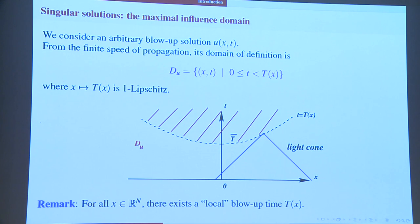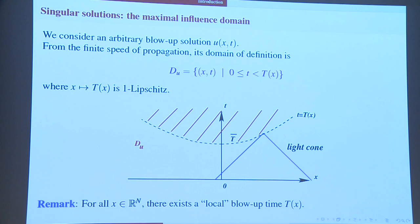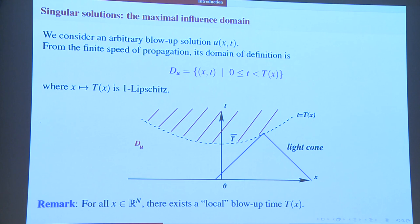I will not consider global end-time solutions but only solutions which exist up to some time t-bar. From the finite speed of propagation, the solution may stop existing at this minimal time and then continues to exist somewhere else up to some surface which is a graph x gives capital T of x — a kind of local blow-up time. From finite speed of propagation, this graph is already one-Lipschitz, because my domain of definition is simply a union of backward light cones.